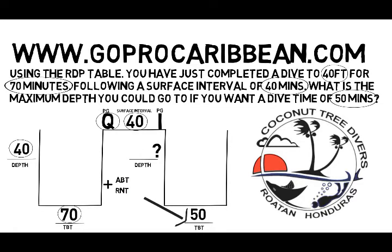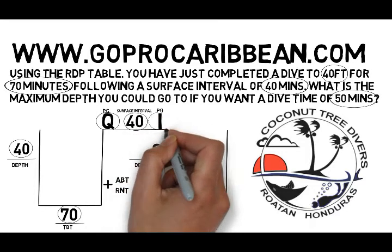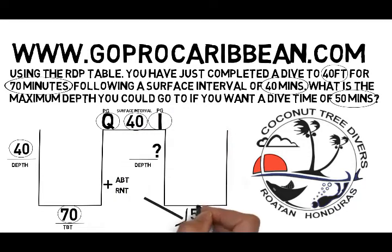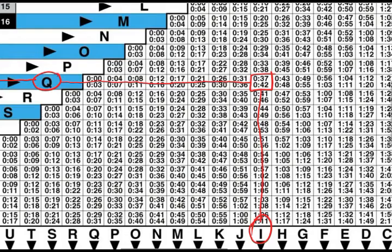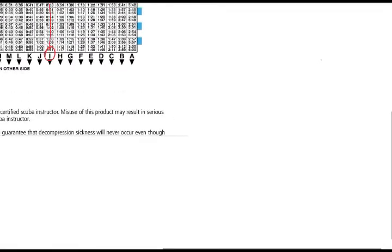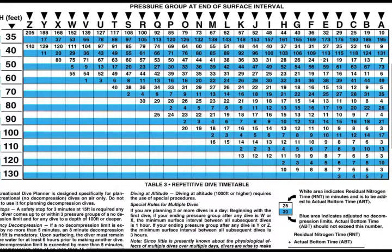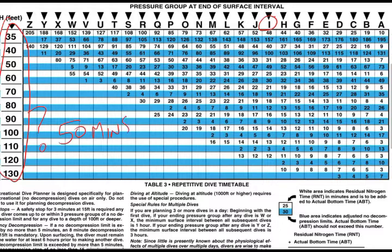The next blank follows pressure group I, and we have to use the information that comes after that blank, which we can do on side two of the table. We know we're in pressure group I, and the other bit of information is that we want to do a 50-minute dive. So we're going to use that 50 minutes and pressure group I to figure out what the maximum depth we could go to is.